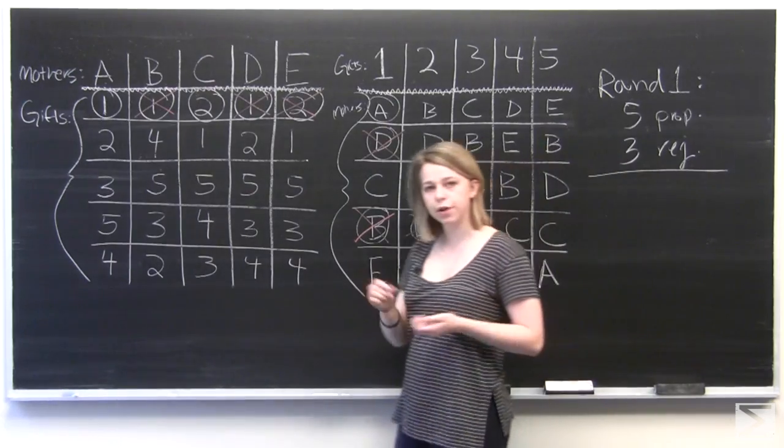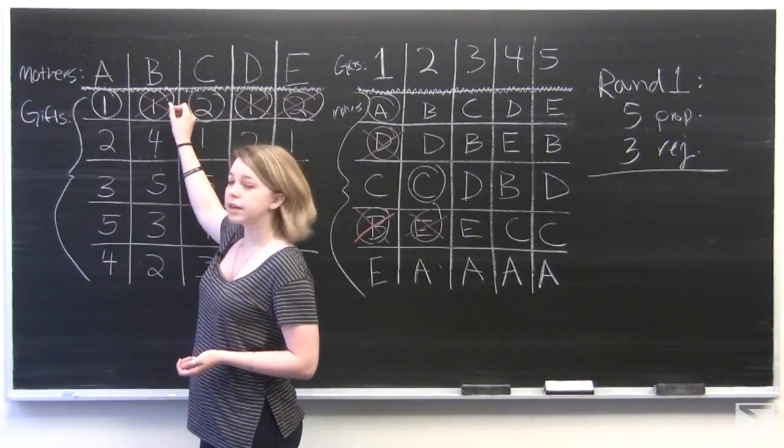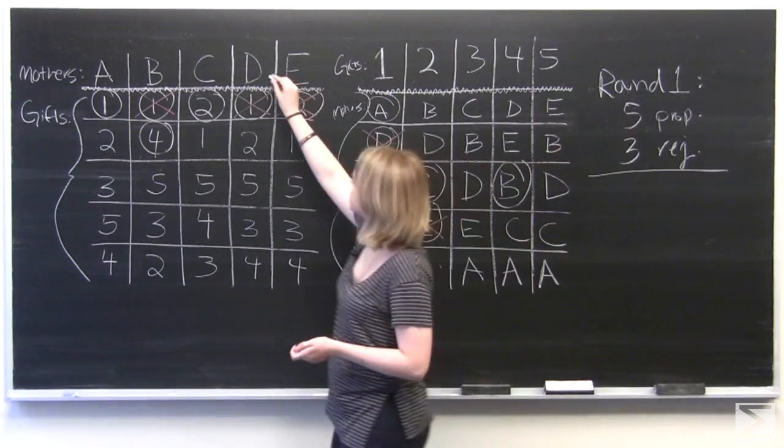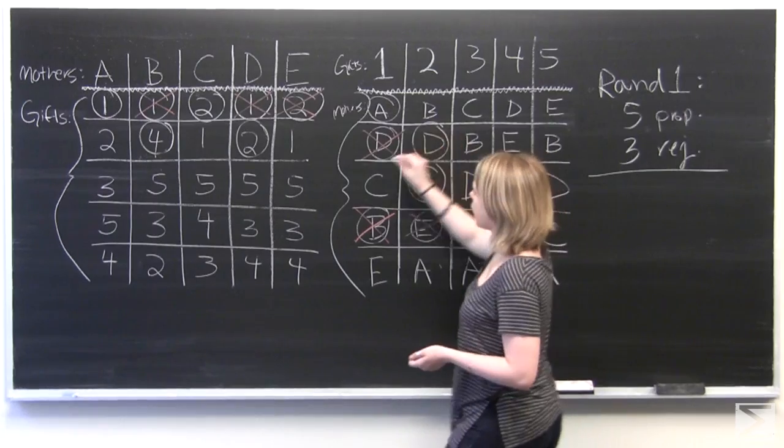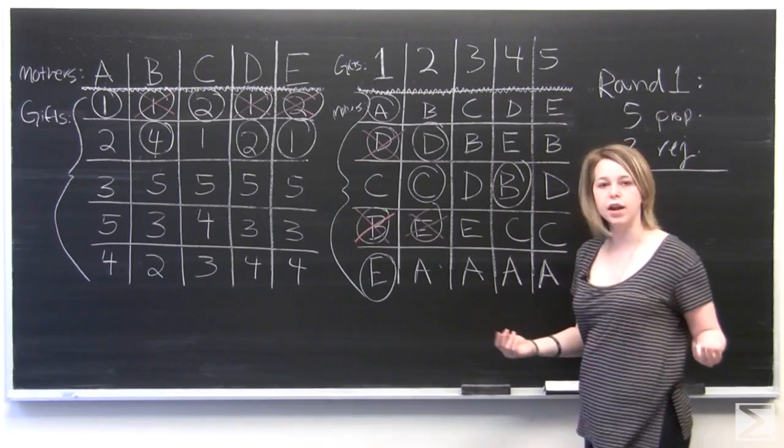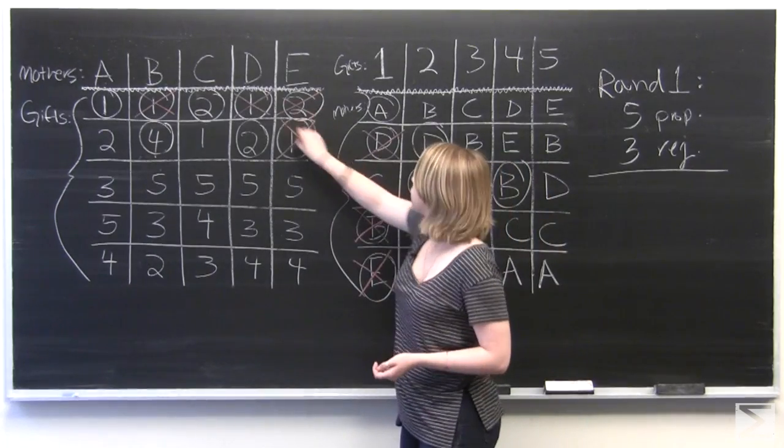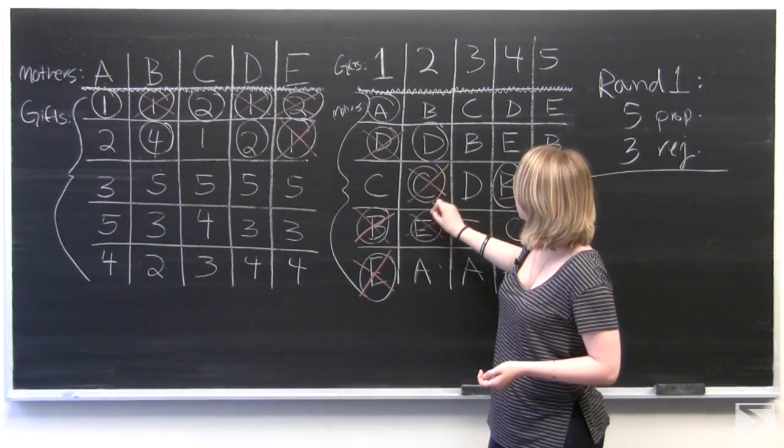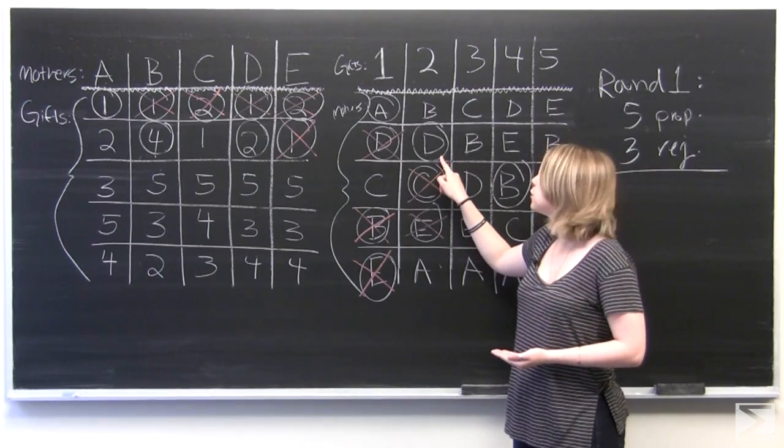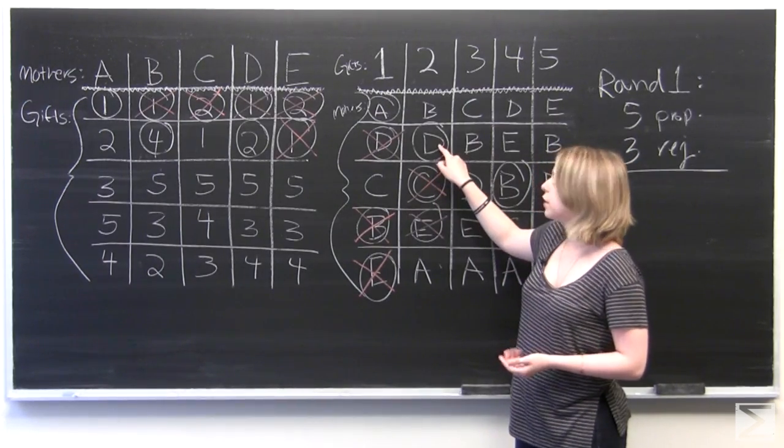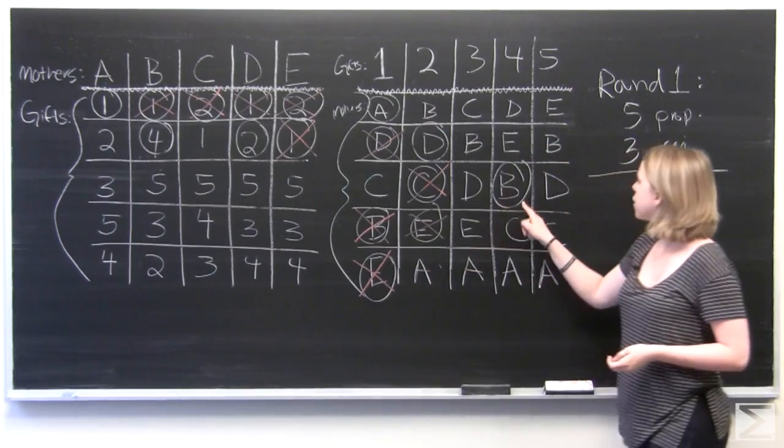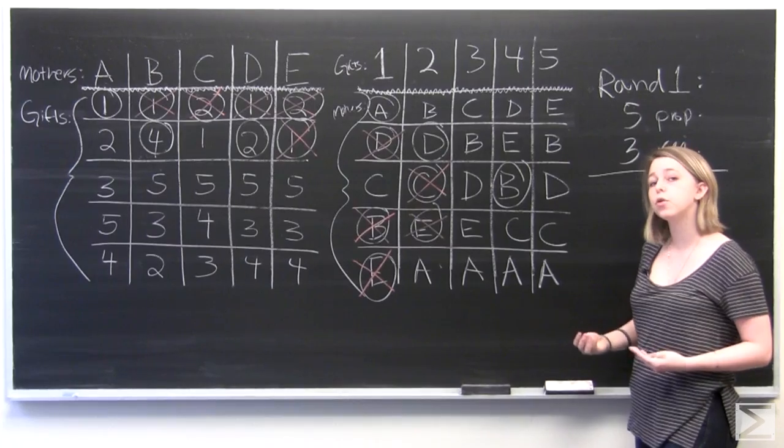And so we'll move on to round number two. Mother B was rejected the first time, so she'll choose gift number four this time. And Mother D was rejected. She chooses number two. And Mother E was rejected and chooses number one. And this time, we've got a couple more things to cross off. And C's pairing didn't work any longer because Mother D decided that she would like gift number two. And with the child's preference placing D higher than C, C was crossed off the list. And B is the only one who has proposed that she would like gift number four. So that is stable for now.